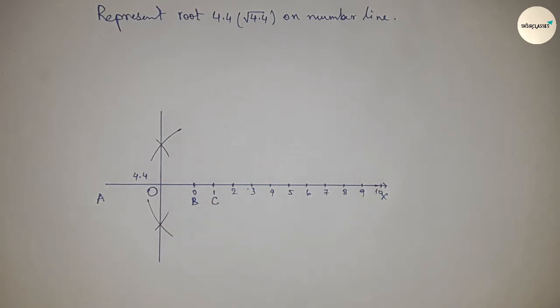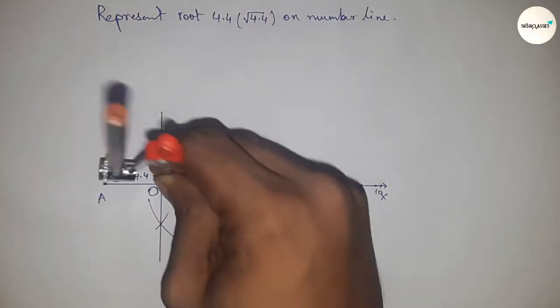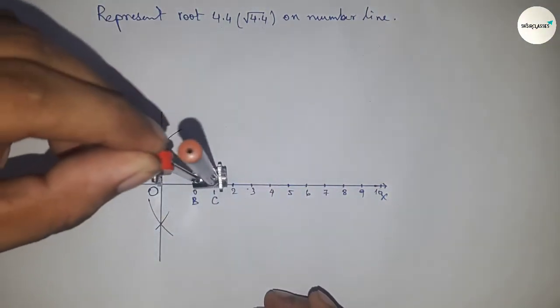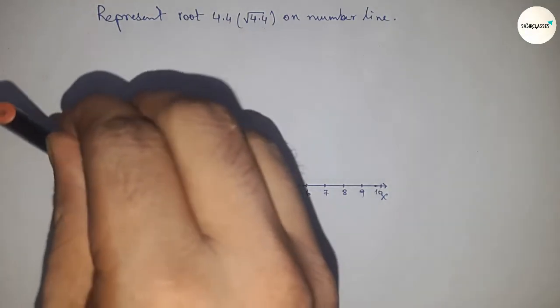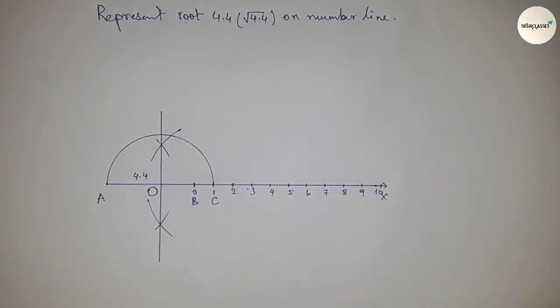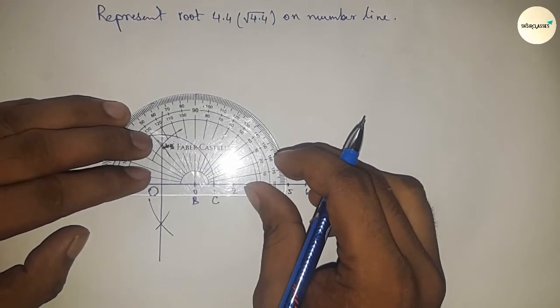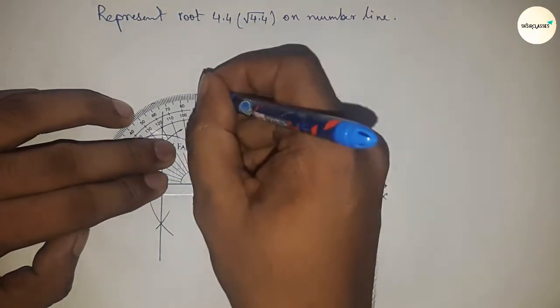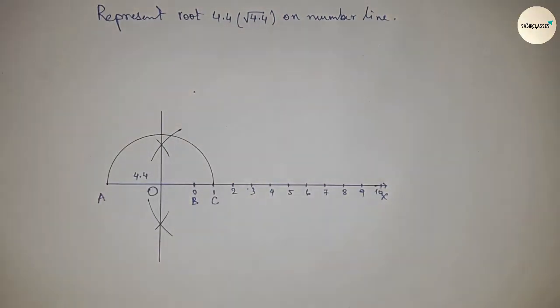Next, taking the distance OA and OC to draw a semicircle. Next, drawing a 90 degree angle on the point B by protractor.